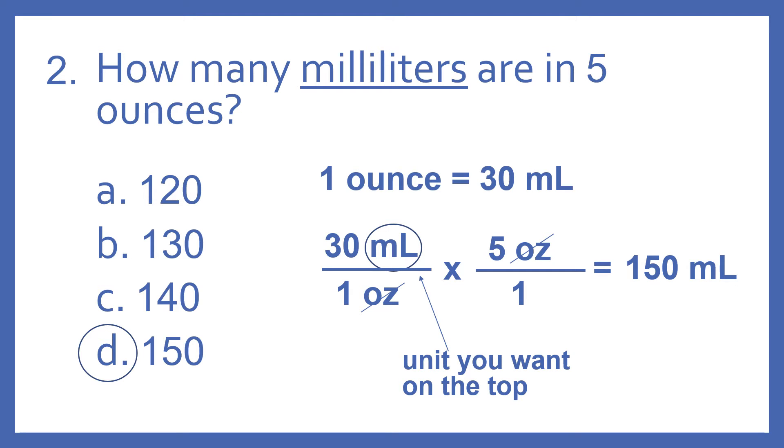To solve this problem, we need to know our conversion equivalents. One ounce equals 30 milliliters. So one way to do this is to set up fractions that cancel like units and then multiply. So there are 30 milliliters per one ounce,